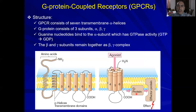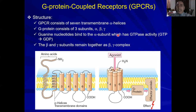Now let's discuss the G-protein itself. The G-protein consists of three subunits: alpha, beta, and gamma. The guanine nucleotide — GTP and GDP — binds to the alpha subunit. The beta and gamma subunits are involved in different signal transduction pathways. The alpha subunit also has GTPase activity, meaning it can stop the activity of the G-protein by converting GTP back to GDP.